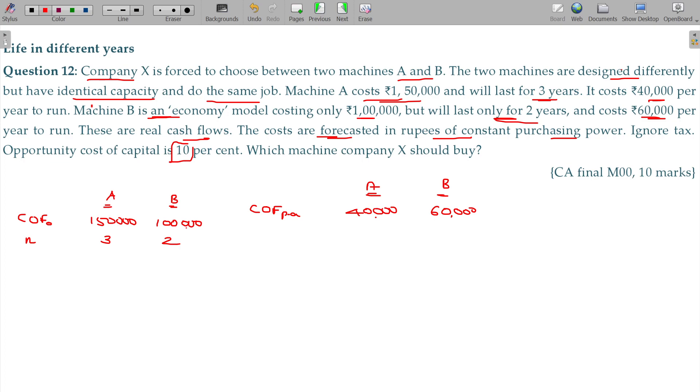Tax rate, ignore tax. Cash inflow before tax should be equivalent to cash inflow after tax also. So you no need to worry about that. You can take cash outflow at 1.5 lakhs, 40 and 60.